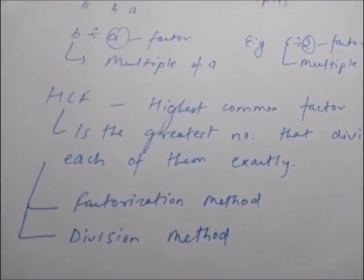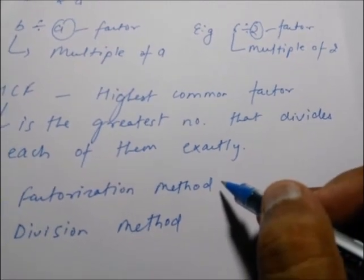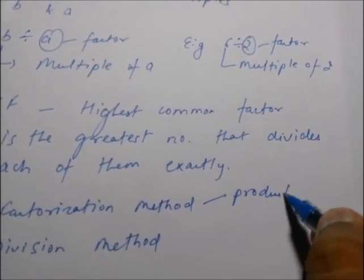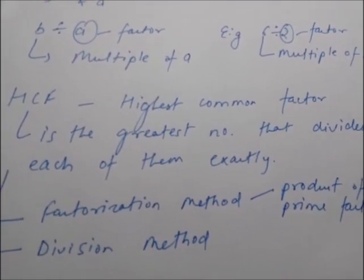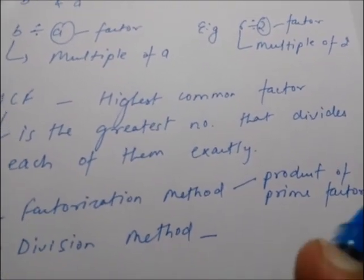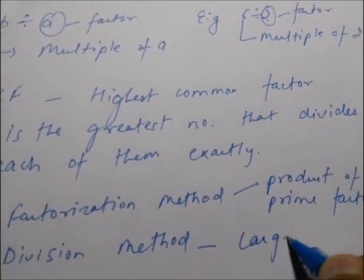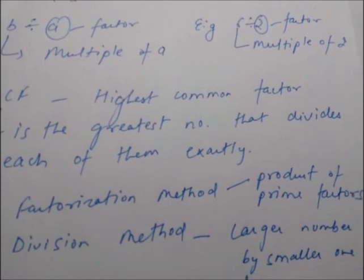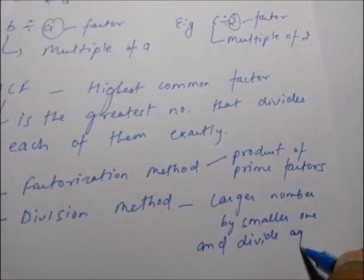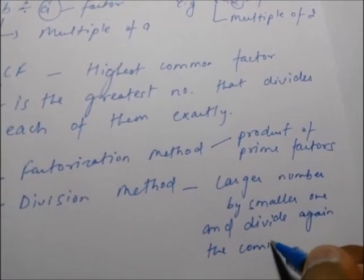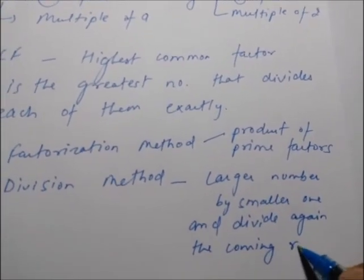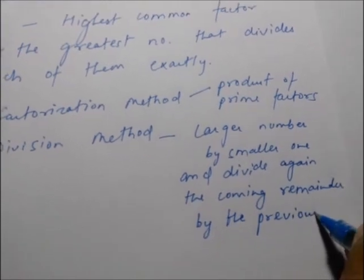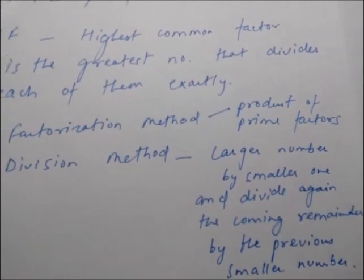Both methods are important. In the factorization method, express each of the numbers as the product of prime factors. In the division method, we divide the larger number by the smaller one, and then divide the coming remainder by the previous smaller number.